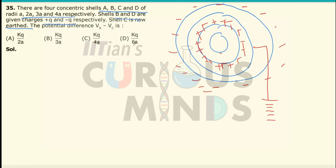In order to maintain neutral charge, negative charge will be induced on the inner part of shell C, and positive charge will be induced on the outside. But since shell C is grounded, this induced negative charge will be eliminated. So the potential at point A is due to the positive charges on shell B and the negative charges on shell D.